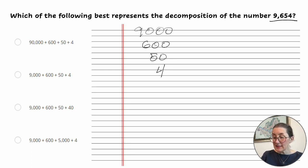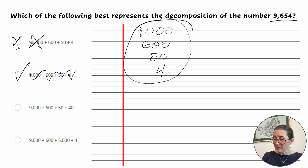First one is 90,000. So our number only goes up to 9,000, so right away this is not the correct answer. The second one, 9,000 plus 600 plus 50 plus 4. So this looks to be the correct answer. It's exactly the same as what we found here. Now let's look at the other two just to see where they went wrong.